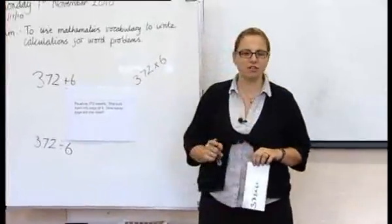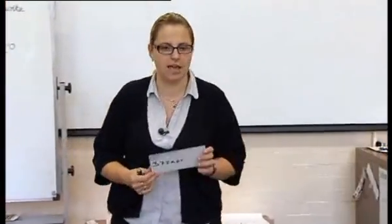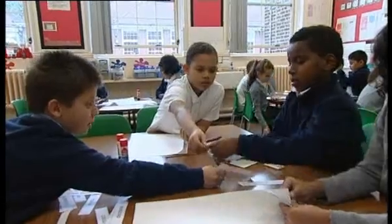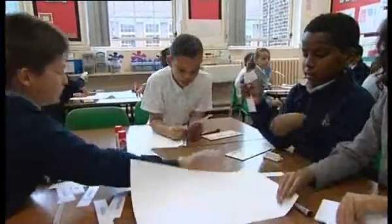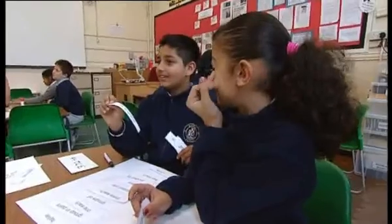So what we're going to concentrate on today is which words in this problem told us that it needed to be a division calculation. The main part of the lesson, the children have four A3 pieces of paper with the four number operations written on them, and a lot of vocabulary on cards. They have to sort with their group, discuss with each other, and sort the vocabulary cards into which of the four operations they would indicate if they found those phrases in the question.